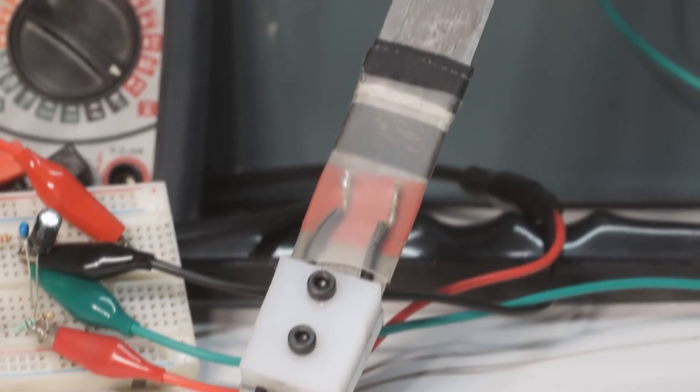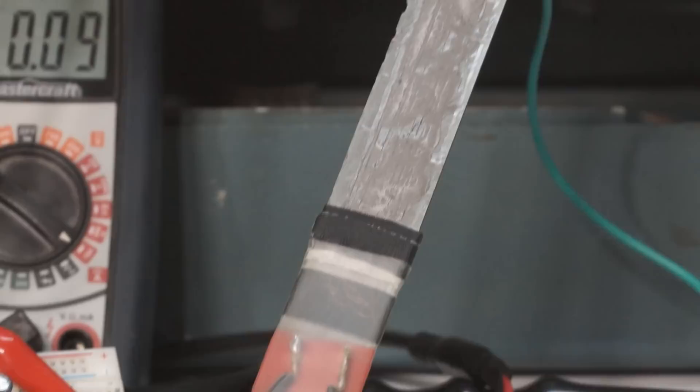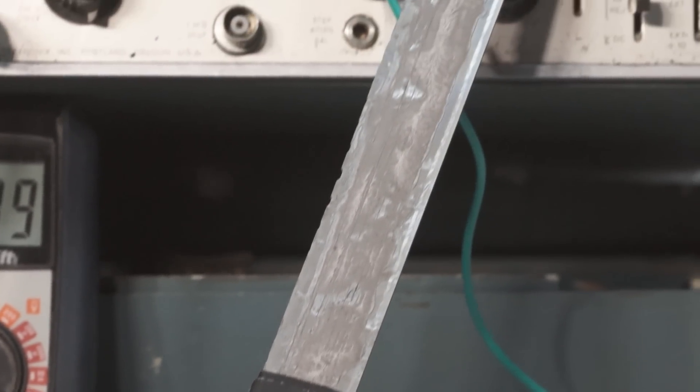My strain gauge consists of a very thin wire laid out in a convoluted path on a strip of springy carbon steel.